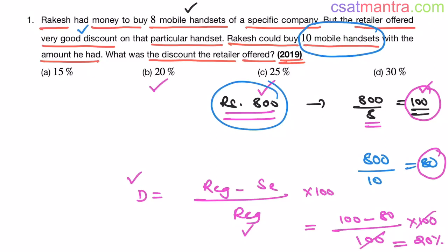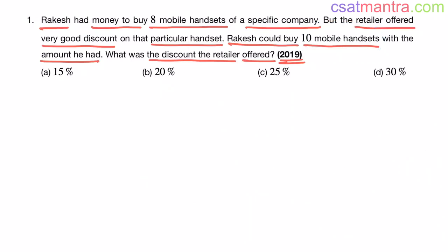You could directly tell by looking at these two values, but the discount formula is: regular price minus selling price, divided by regular price, multiplied by 100. Now let's solve this problem conventionally.